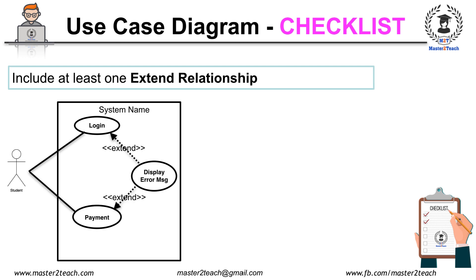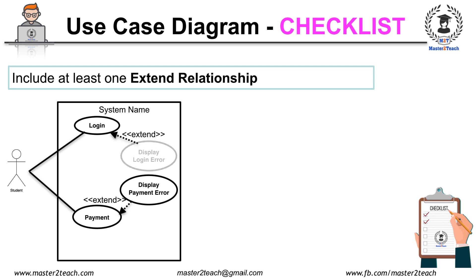More than one use case can extend the same extended use case only if the functionality needed to execute for both use cases is the same; otherwise, make a different extended use case for each. For example, the login use case extends display error message and the payment use case also extends display error message. Here, different use cases extend different scenarios, so separate them into display login error and display payment error. Check whether more than one base use case extends or includes the same extended or included use case carefully.